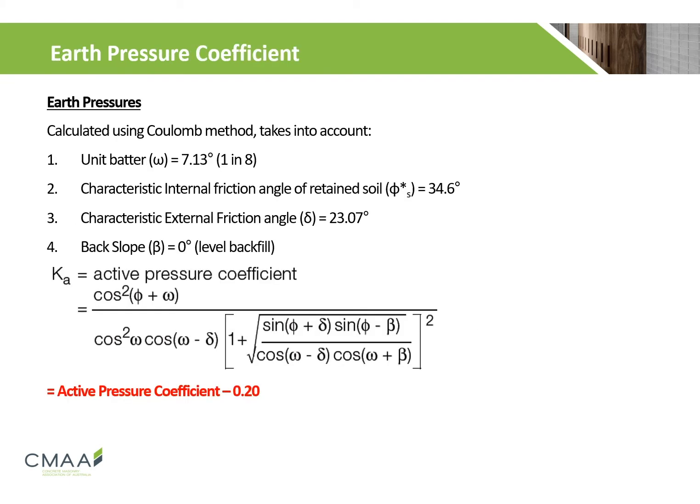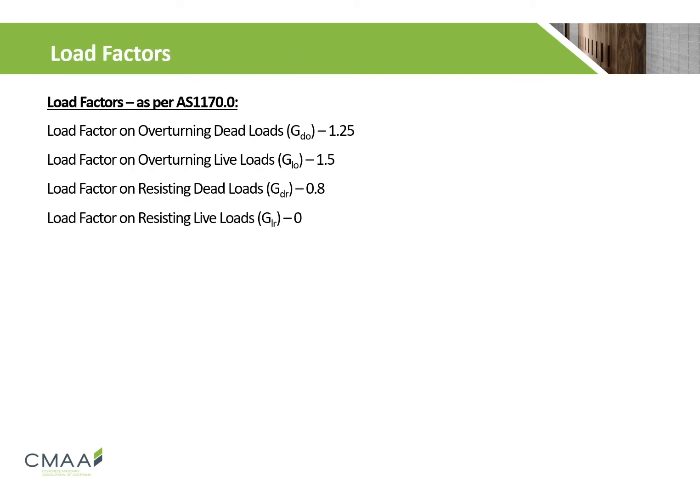Using these soil properties, we can determine our active pressure coefficient. By combining these parameters, we get an active pressure coefficient of 0.2. Finally, we need to stipulate the load factors that will be used in our equations for determining the overturning and resisting loads, which are available on screen as per AS 1170.0.